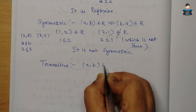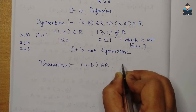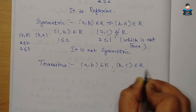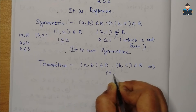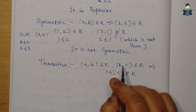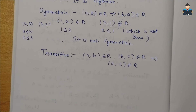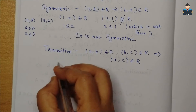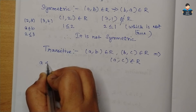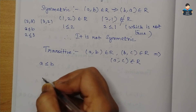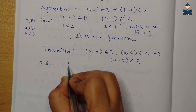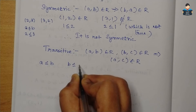Next is transitive. The condition: if (a,b) belongs to R and (b,c) belongs to R, this implies (a,c) should also belong to R for all a, b, c belonging to set A. So if (a,b) belongs to R, a ≤ b, and if (b,c) belongs to R, b ≤ c.